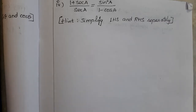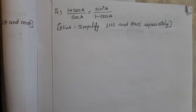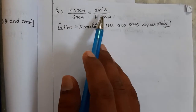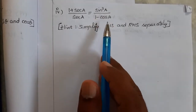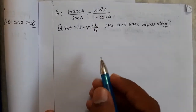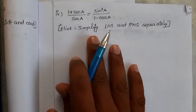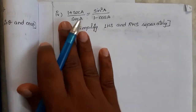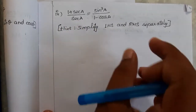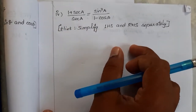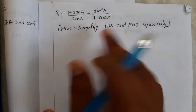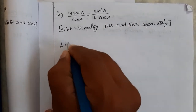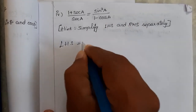Here we go for the next problem: 1 plus cot A divided by cot A is equal to sin squared A divided by 1 minus cos A. It is given to simplify LHS and RHS separately. If we simplify the LHS we will get one term, so that is why we have to simplify separately.